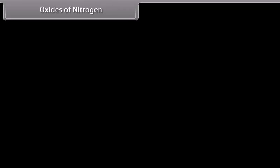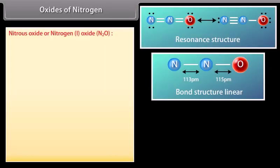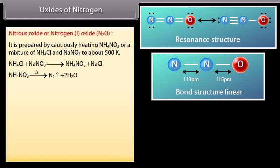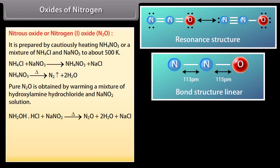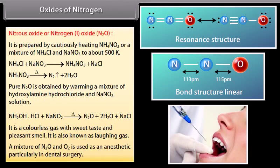Nitrogen forms a number of oxides in different oxidation states. Nitrous oxide or nitrogen(I) oxide (N2O): It is prepared by cautiously heating NH4NO3, or a mixture of NH4Cl and NaNO3, to about 500 K. Pure N2O is obtained by warming a mixture of hydroxylamine hydrochloride and NaNO2 solution. It is a colourless gas with a sweet taste and pleasant smell, also known as laughing gas. A mixture of N2O and O2 is used as an anaesthetic, particularly in dental surgery.